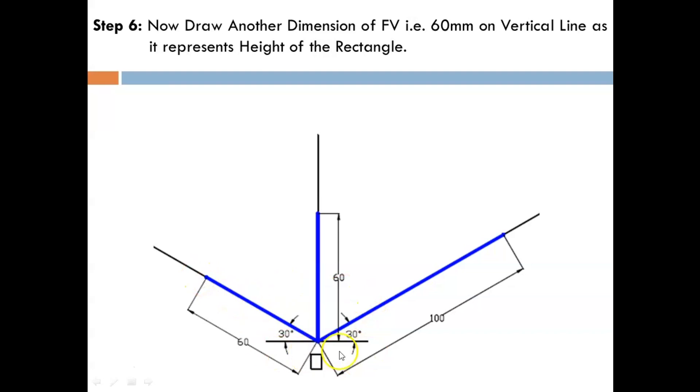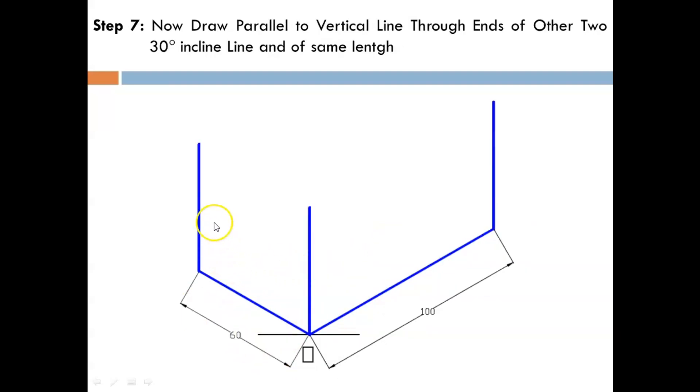On all three axes, we have plotted all the required dimensions. In isometric, you always have to draw three dimensions first: length, breadth, and height. As per the given question, length is 100, breadth or width is 60, and height is 60. Now draw parallel to the vertical lines through the end of the 30-degree inclined lines.